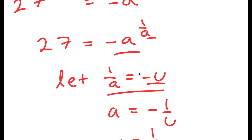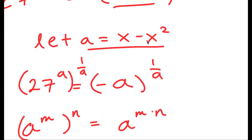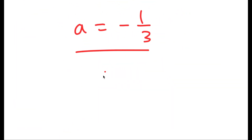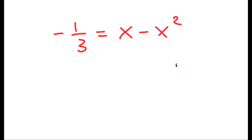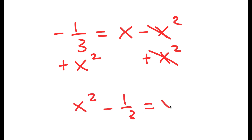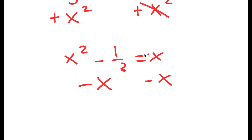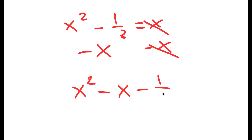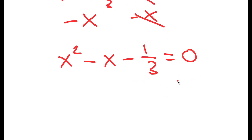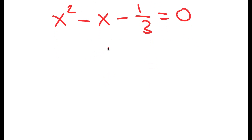Now I need to find x. Remember, we let a equal to x minus x squared. So negative 1 over 3 is equal to x minus x squared. To solve this, I'm going to first add x squared to both sides, giving x squared minus 1 over 3 equals x. Now subtracting x from both sides, I have x squared minus x minus 1 over 3 equals 0. This is a quadratic equation, meaning it can be solved using the quadratic formula.